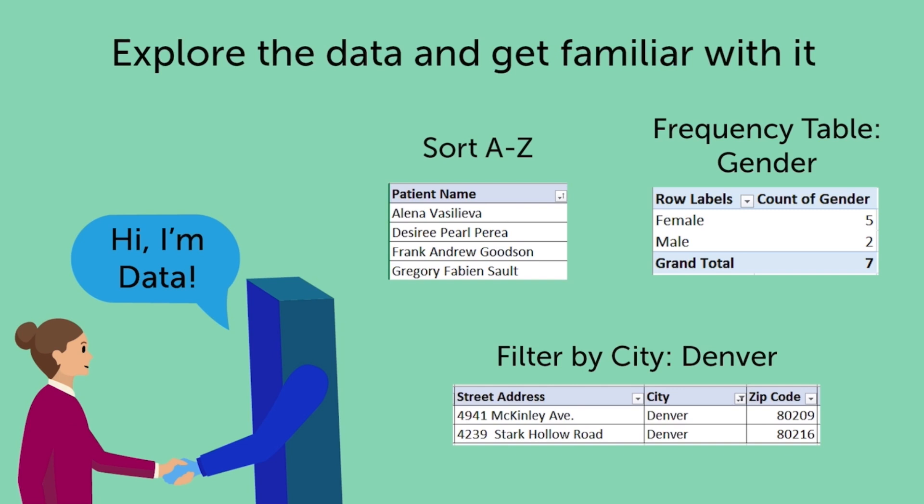A categorical variable is just a variable, like gender, that has different values. Others include race, ethnicity, age group, or education.